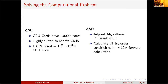How do we solve that computational problem? At Scotia Bank we use two techniques. One is GPU cards — they have thousands of cores and are highly suited to Monte Carlo just as they are to deep learning. We find that one GPU card is equivalent to 10^2 to 10^3 CPU cores. But even that is not enough for all those sensitivities, so we've also used adjoint algorithmic differentiation (AAD), which calculates all first-order sensitivities in around 10 times the forward calculation. Instead of performing 10,000 revaluations of the XVA, we calculate it once and get sensitivities using AAD in approximately 10 times the base calculation.